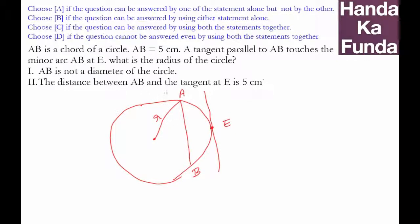The first statement says AB is not the diameter and that AB is 5 in length. Well, this does not help us in any way.